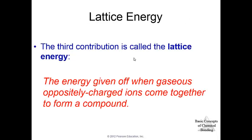This third piece to the puzzle is actually called the lattice energy. This is the energy given off when gaseous oppositely charged ions come together to form a compound. You'll also see this defined as the energy absorbed when you take a compound and separate it into its gaseous ions. In that way, the lattice energy would be positive. If you look at it as these oppositely charged ions come together to form a compound, they give off energy, then the lattice energy is negative. It depends on which way you look at it.